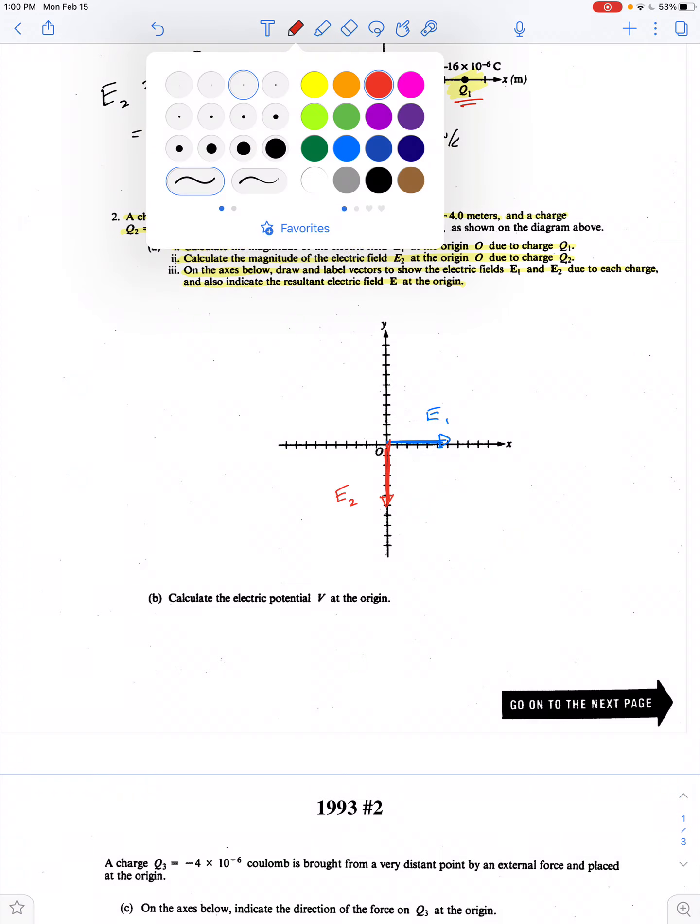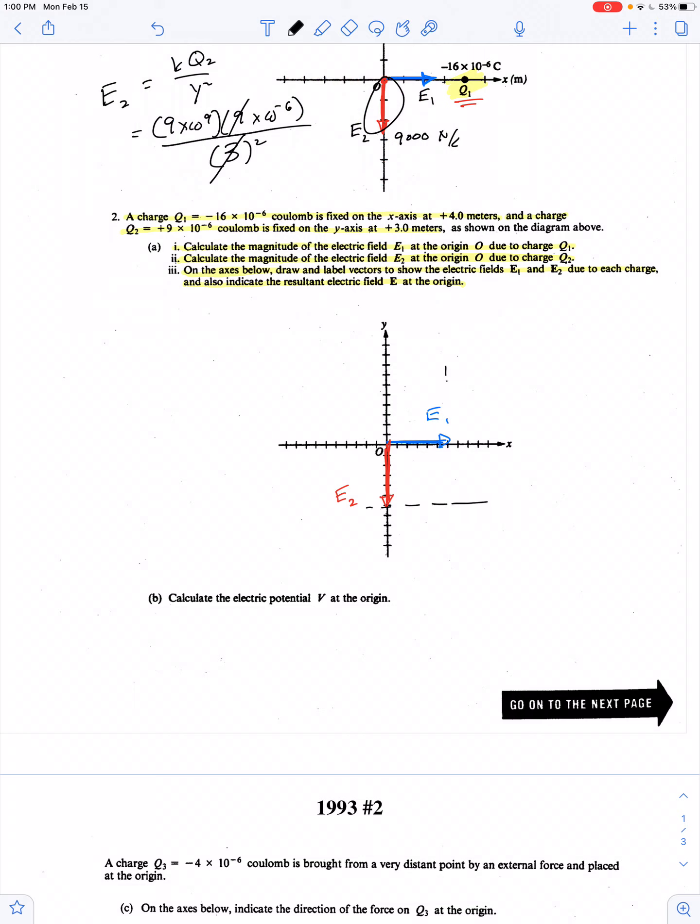And obviously, by the parallelogram method, the resultant, or the net electric field, is going to point at an angle of 45 degrees due to the fact that these both have the same magnitude, 9,000 newtons per coulomb. And so the net electric field should be equal to √2 times 9,000 newtons per coulomb, which gives us approximately 12,728 newtons per coulomb if we round off to the nearest whole number.